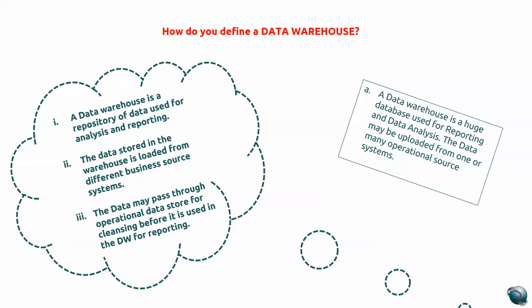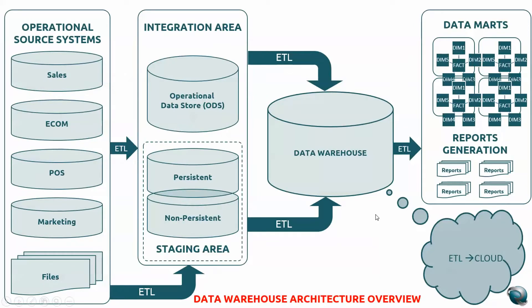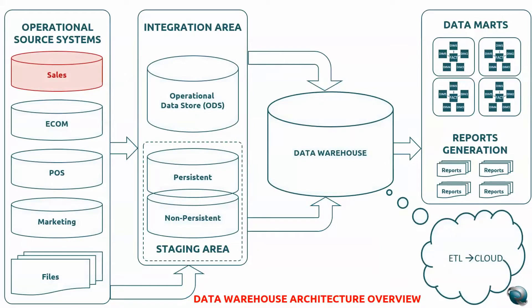It is coming from many different operational source systems. Let's take a look at how we are relating a data warehouse to a real world scenario. Assuming that you have a retail company and you are selling consumer products, consumers generate revenue for your company from different channels. You have a website where you display all your products, so people go directly to the website and purchase a product, and the transaction flows through from the e-commerce system.